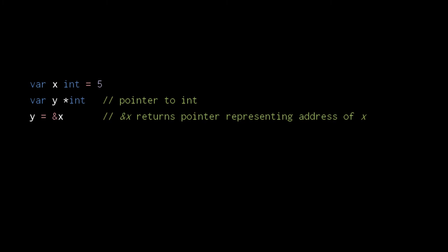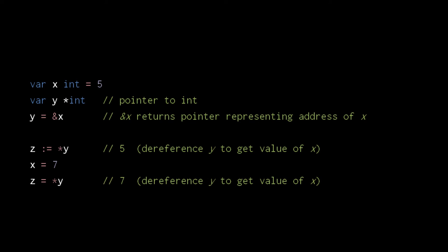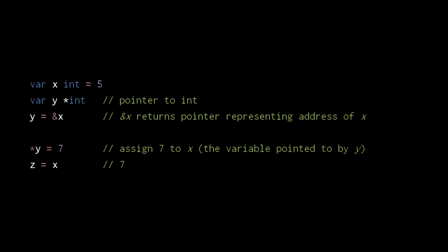A pointer is a data type that represents the address of a variable, a struct field, or an element of an array or slice. The variable y here is declared as a pointer to int, signified by the asterisk preceding int. To get the pointer value representing the address of the int variable x, we use the address operator, ampersand. To access the value at the address represented by a pointer, we use the dereference operator, asterisk. Here dereferencing y gets us 5, the current value of x. If we subsequently modify the value of x and then dereference y, we get the updated value of x. We can also modify the value at the address represented by a pointer using the dereference operator as the target of assignment. Here we assign 7 to the dereference of y, and because y currently points to x, we are effectively assigning to x.